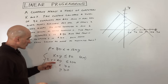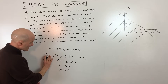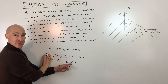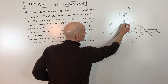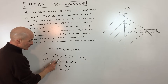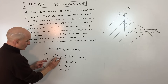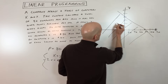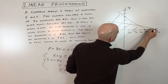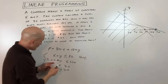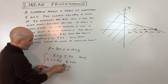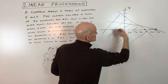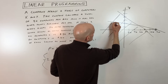For the second constraint, 2X plus 6Y is less than or equal to 240: setting X to zero gives a Y-intercept of 40, and setting Y to zero gives an X-intercept of 120. Drawing that line, and testing (0,0) — zero is less than or equal to 240, which is true — so the origin is on the true side. We shade toward the origin again.